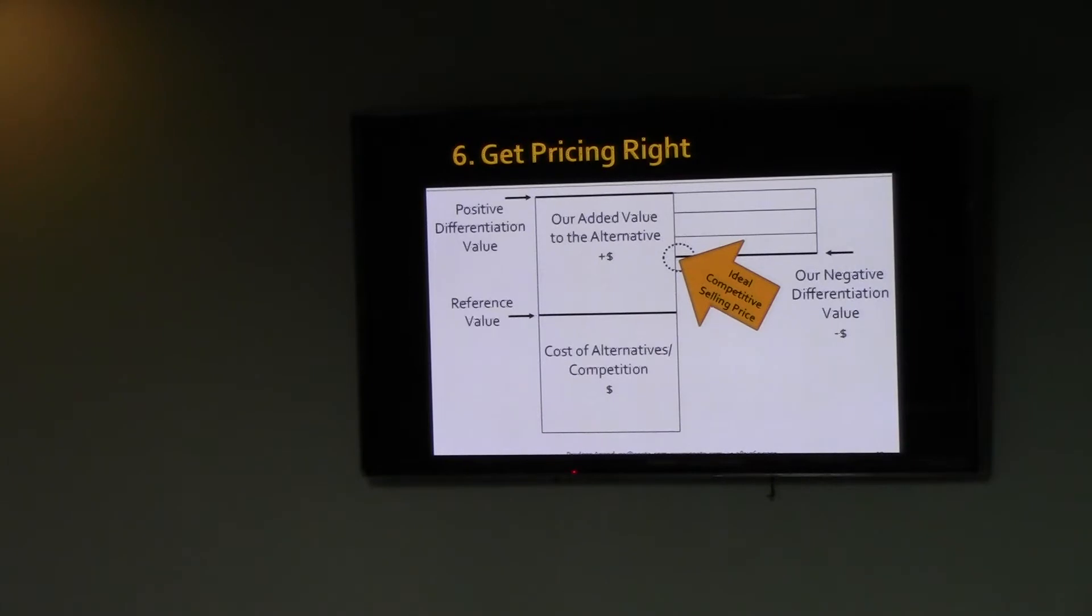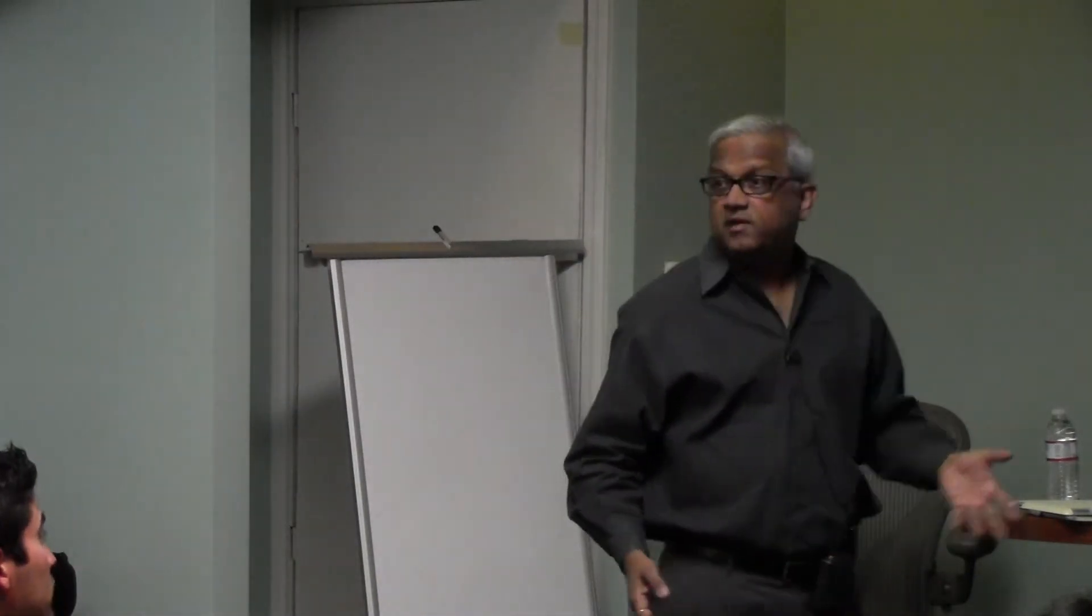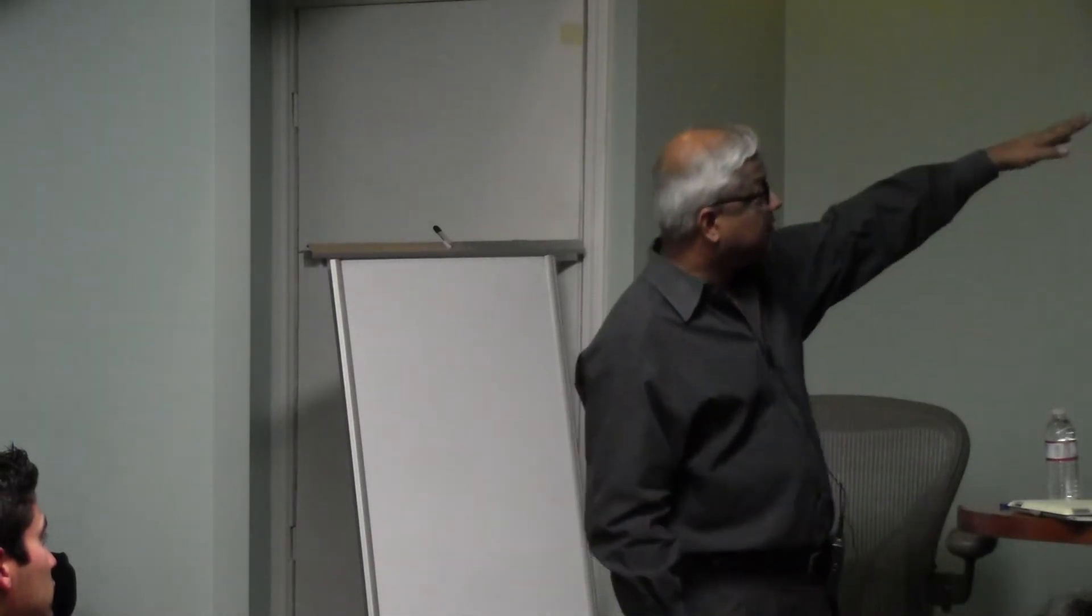You have to be able to look at differentiation, look at the benefits that you deliver, but you have to monetize the value that you provide. The ideal competitive selling price of your product is a competitive product's price, plus the monetized value of the benefits that you provide, minus switching costs. They may do something better than you.